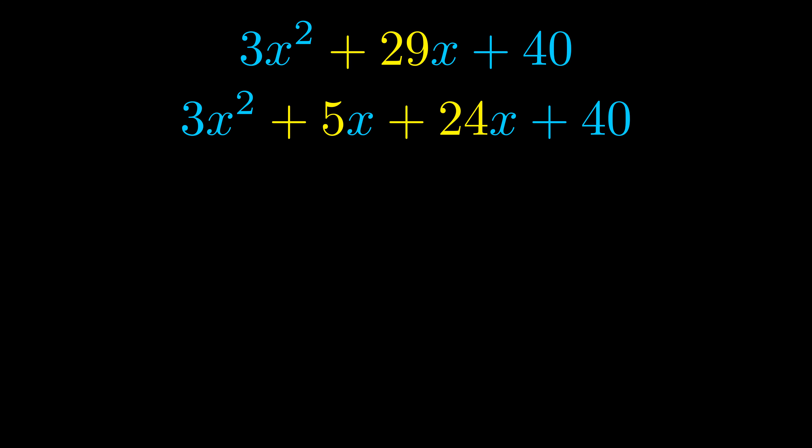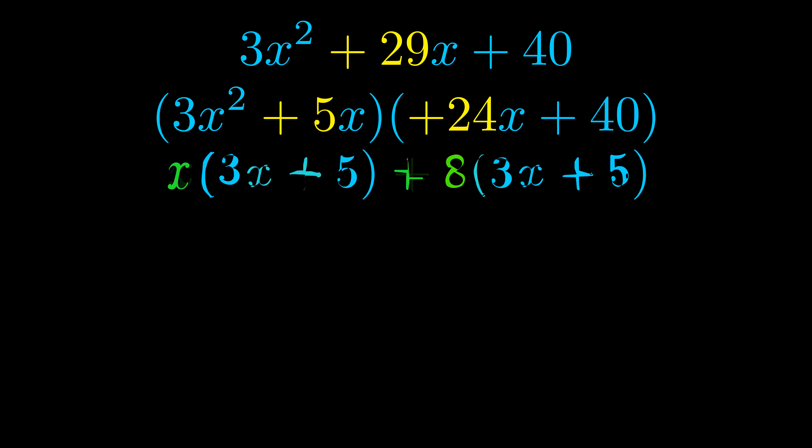Once we've done this we go ahead and put parentheses around the first term and the last term, and we do that so that we can take the greatest common factor out of both terms. We can see the greatest common factor is now outside in green. Notice also how what remains inside of the parentheses is the same in both cases.